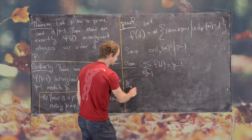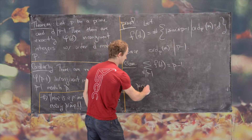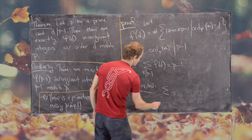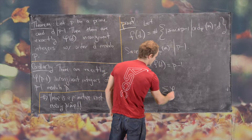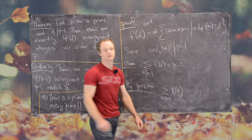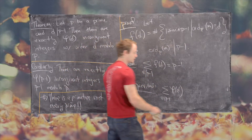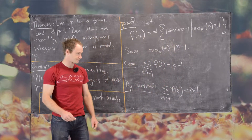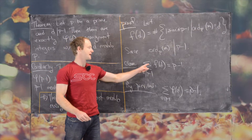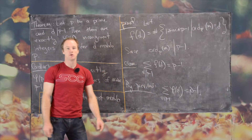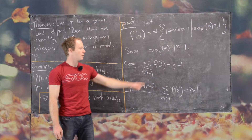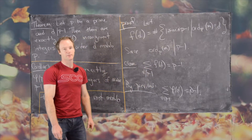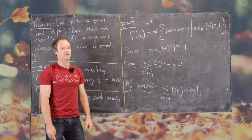By a previous theorem, the sum over all divisors D of P−1 of φ(D) — Euler's phi function — also equals P−1. So we have these two sums equal to each other. What we want to show is that F(D) equals φ(D) for each divisor D, but we're not quite there yet.